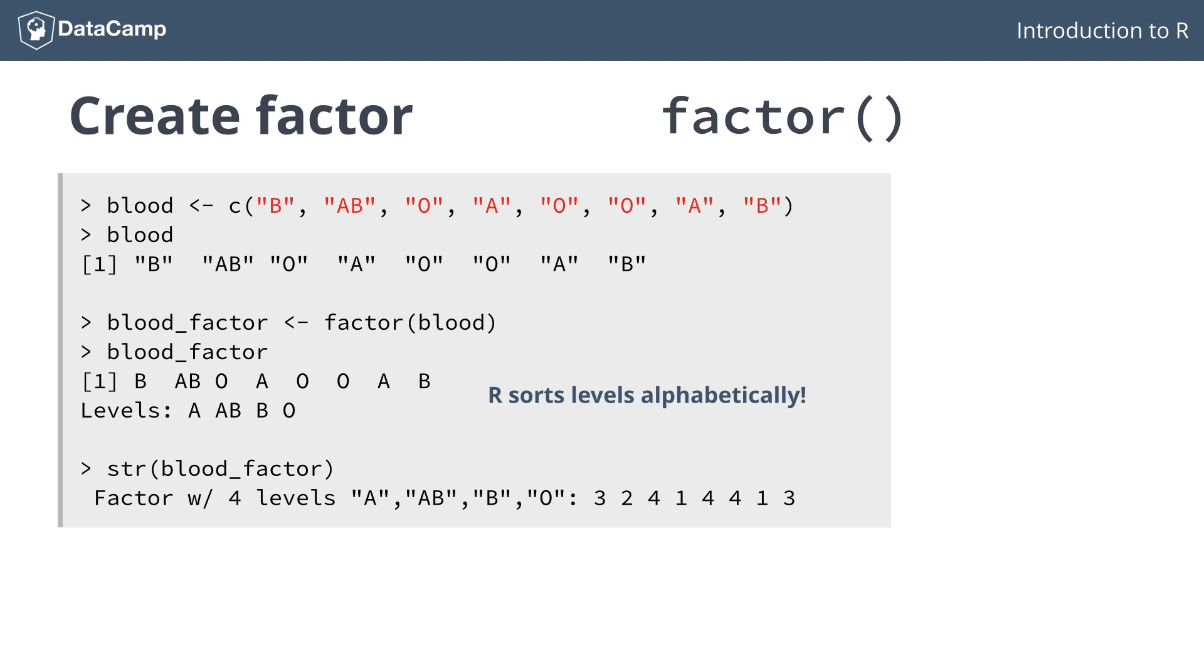But why this conversion? Well, it can be that your categories are very long character strings. Each time repeating the string per observation can take up a lot of memory. By using this simple encoding, much less space is necessary. Just remember that factors are actually integer vectors, where each integer corresponds to a category, or a level.